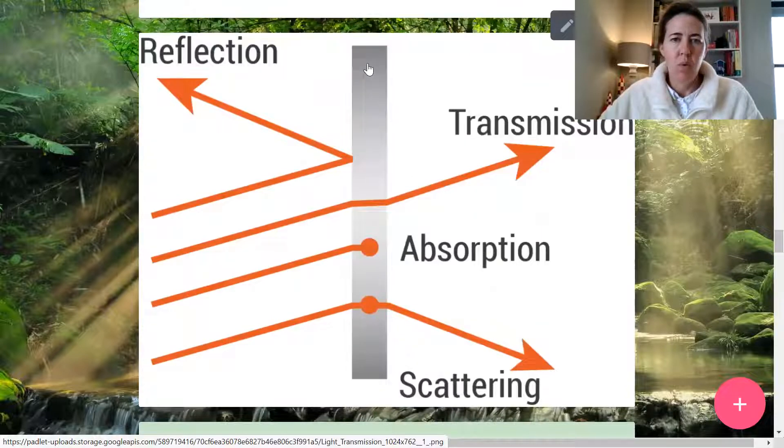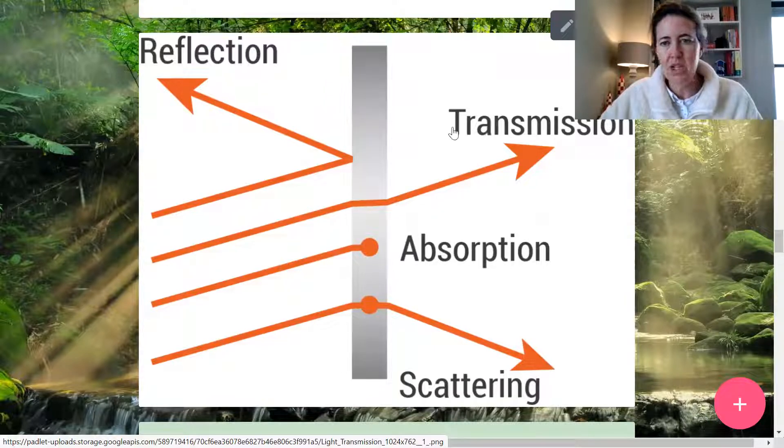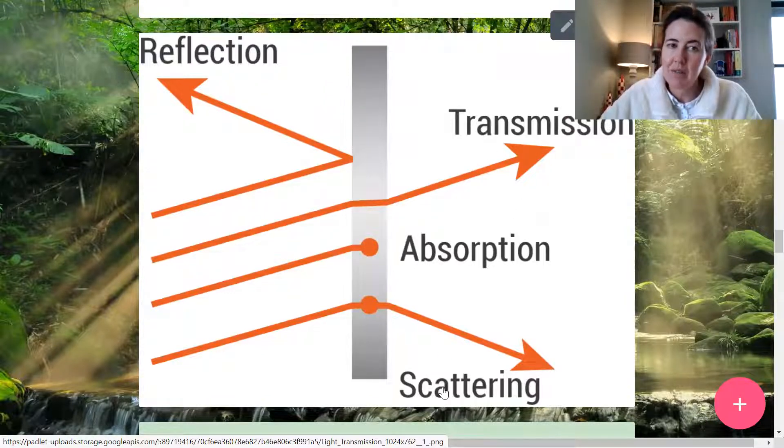Now, four things happen with light when it interacts with materials. It can be reflected, transmitted, absorbed or scattered. So we have these four phenomena. Reflection, transmission, absorption, scattering.